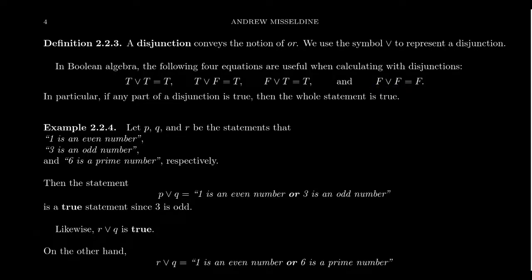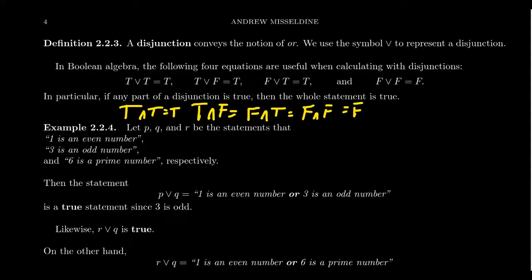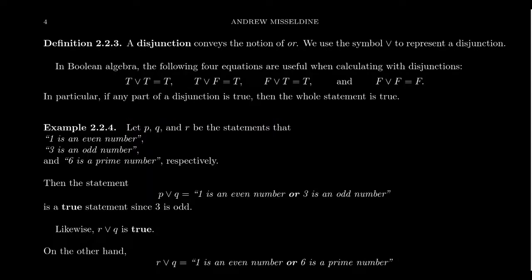There's a duality between conjunctions and disjunctions: a conjunction is only true when both are true, and a disjunction is only false when both are false. Let's look at our primitives P, Q, and R again, where P is 'one is an even number' (false), Q is 'three is an odd number' (true), and this time R is 'six is a prime number' — which is now a false statement, changed from the earlier true one involving five.